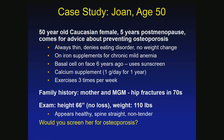This is a 50-year-old woman, five years postmenopausal, who comes in for advice on preventing osteoporosis. She's always been thin, denies an eating disorder, and has no weight change. She has chronic mild anemia and has been on iron supplements. She had a basal cell cancer on her face removed about six years ago and uses sunscreen. She takes a calcium supplement and exercises three times a week. Her family history is significant.